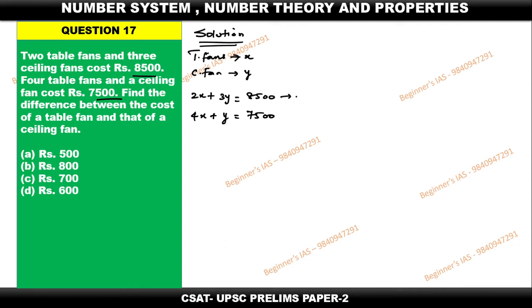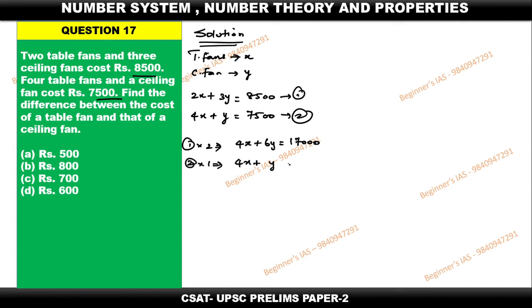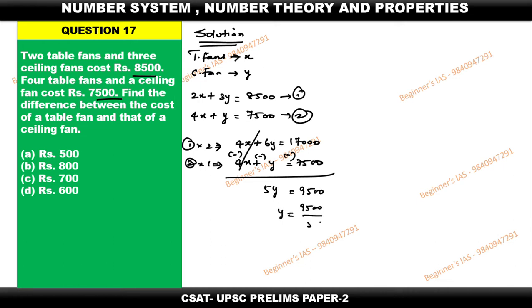I will teach you both methods. To get the value of x and y, we need to make the coefficients the same. Calling these equation 1 and equation 2, multiply equation 1 by 2 to get 4x + 6y = 17000. Now subtract equation 2 from this: (4x + 6y) - (4x + y) = 17000 - 7500, giving 5y = 9500.